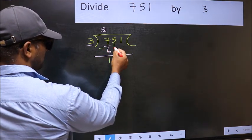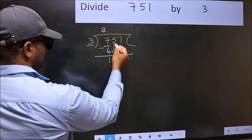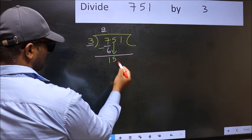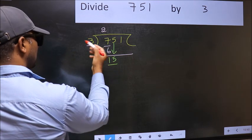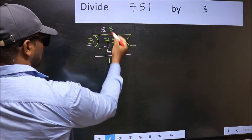After this, bring down the beside number. So 5 down. Now 15. When do we get 15 in 3 table? 3 times 5, 15.